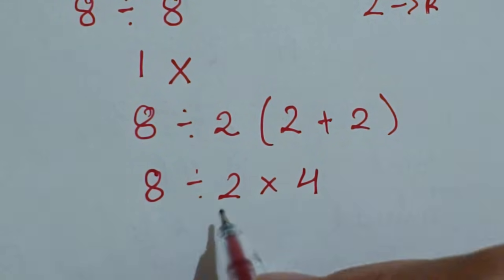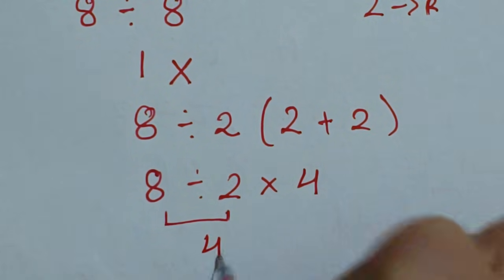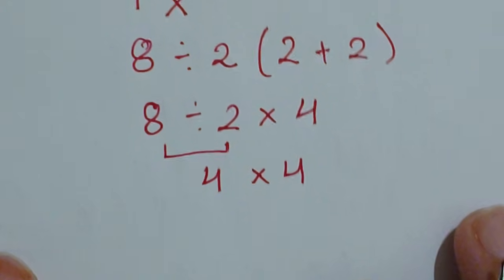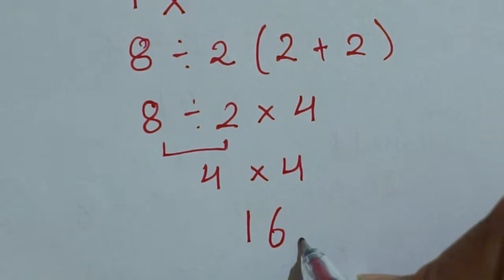First we'll solve this part. So here comes 4 times 4. So 4 into 4, which is 16. So 16 is the correct value for this expression.